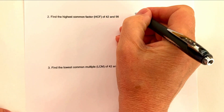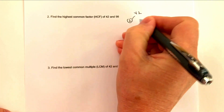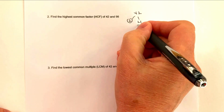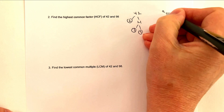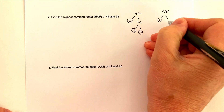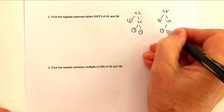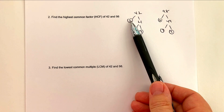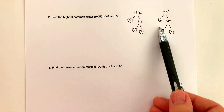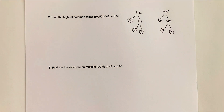Let's start with factor trees. For 42: 2 × 21, then 21 = 3 × 7. For 98: 2 × 49, then 49 = 7 × 7. I find it much easier to start with 2 or 3 and work down with small numbers — you'll see this makes a lot of sense when we get to the harder questions.